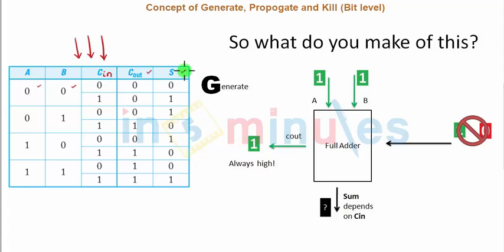Now look at the truth table properly and tell me if you can identify a case where your C out... Basically what we are trying to do is we want to reduce our dependency on C in, because that was a drawback in the ripple carry adder where every stage had to depend on its C in which came from the previous stage. So to avoid this dependency, tell me, looking at the truth table, do you see any case where your C out is equal to 1 irrespective of your C in?